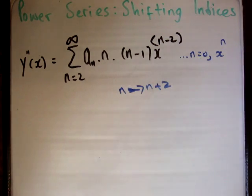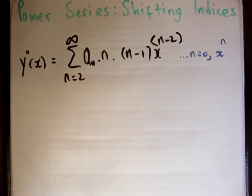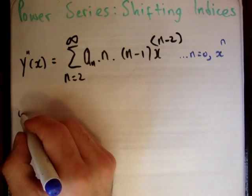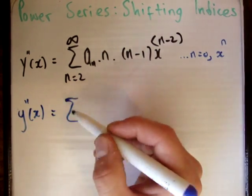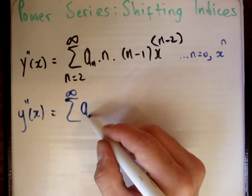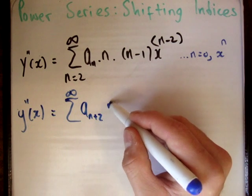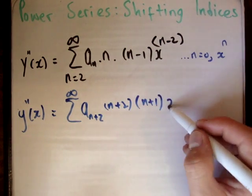And that will shift everything. So in this term, I will substitute n plus 2 everywhere. So I'll get that y double prime of x is equal to the sum to infinity, I'll leave this for a moment, a n plus 2, n plus 2, n plus 1, x to the n.